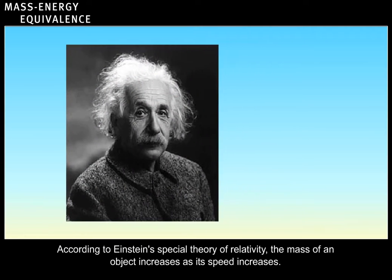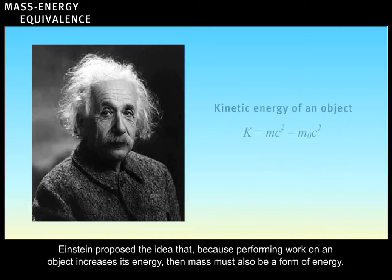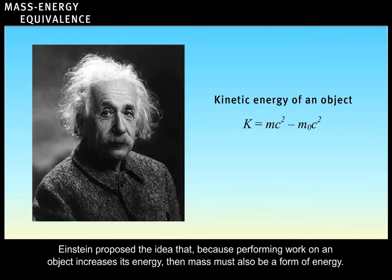According to Einstein's special theory of relativity, the mass of an object increases as its speed increases. Einstein proposed the idea that because performing work on an object increases its energy, then mass must also be a form of energy.